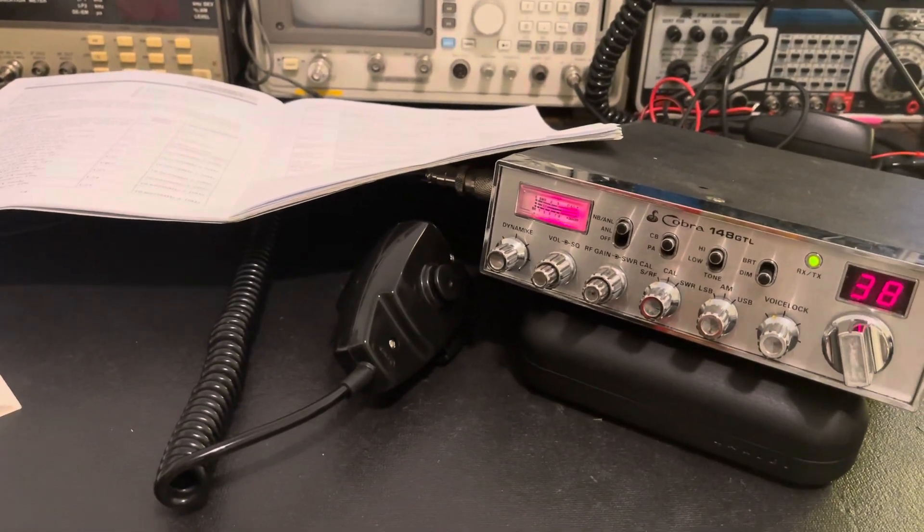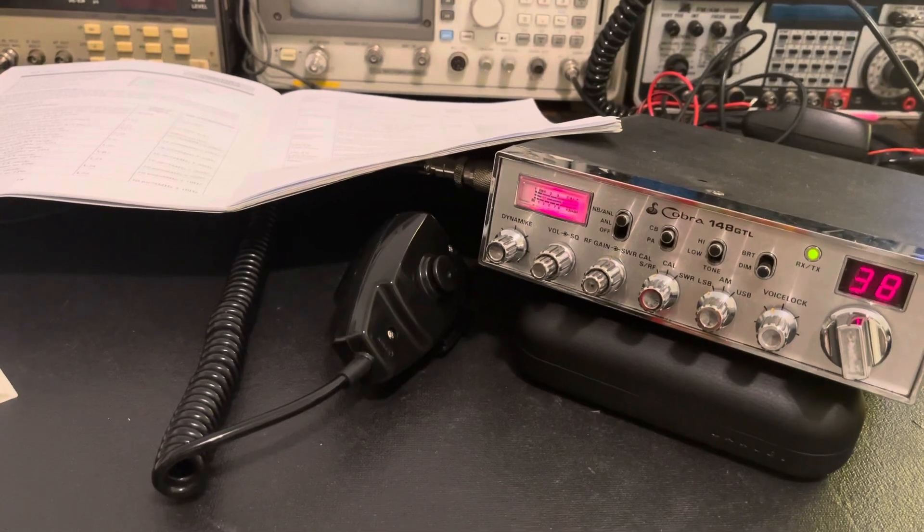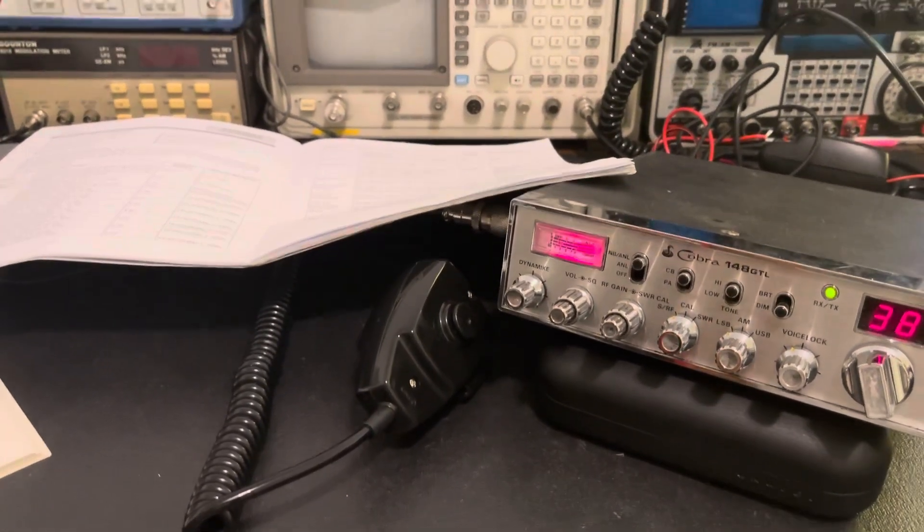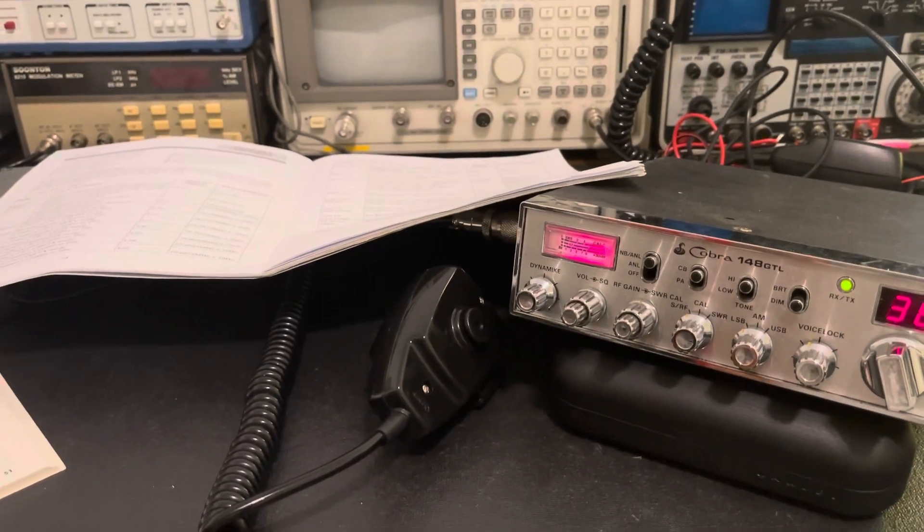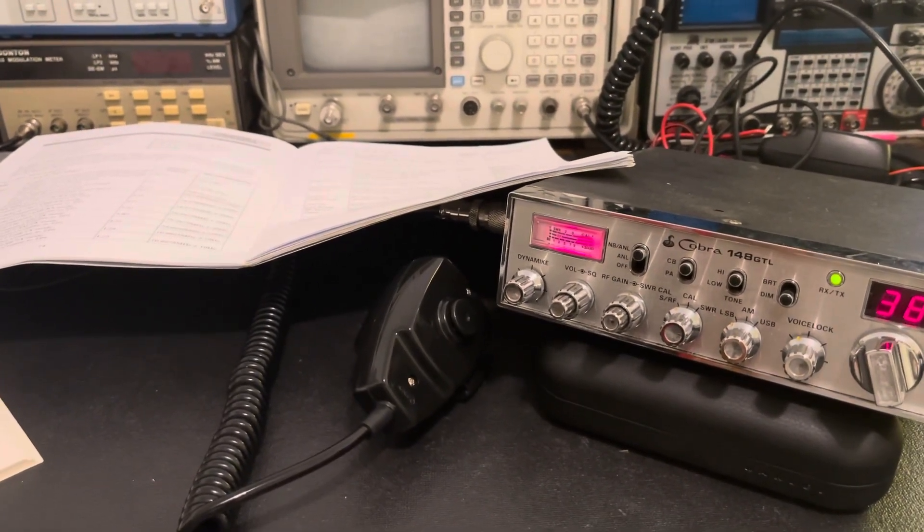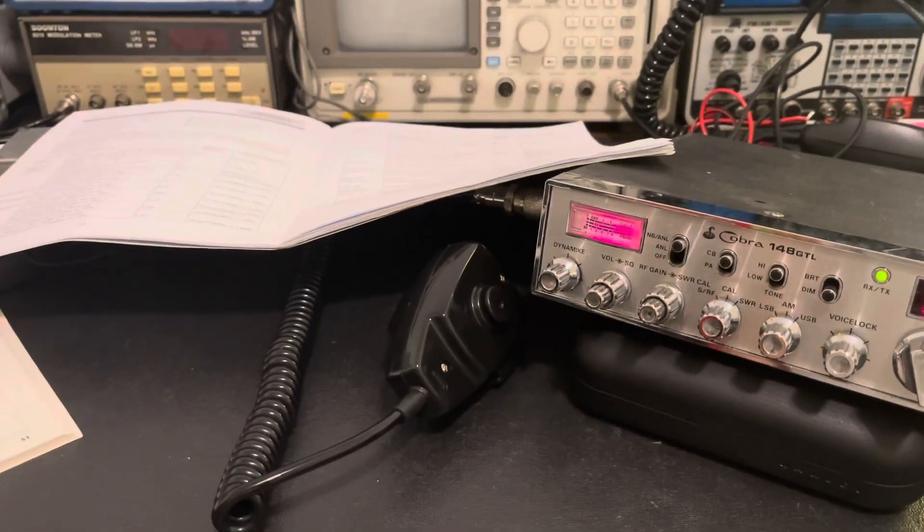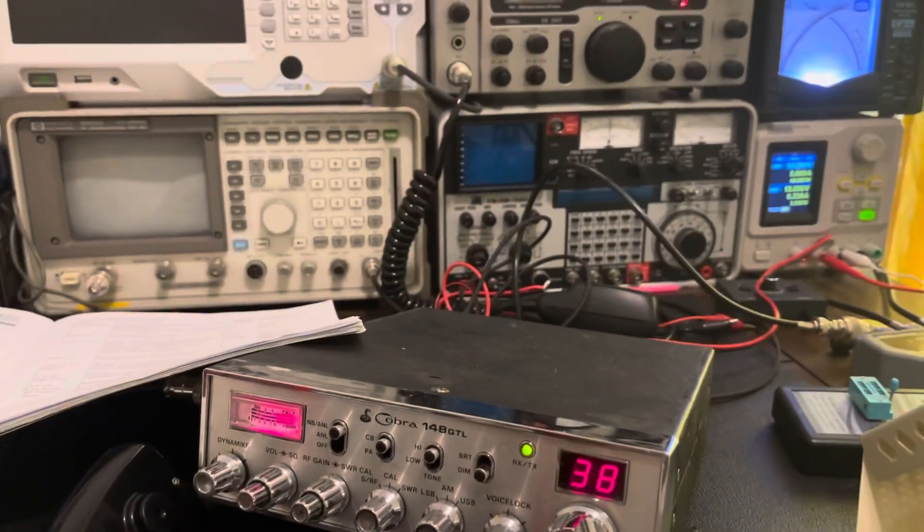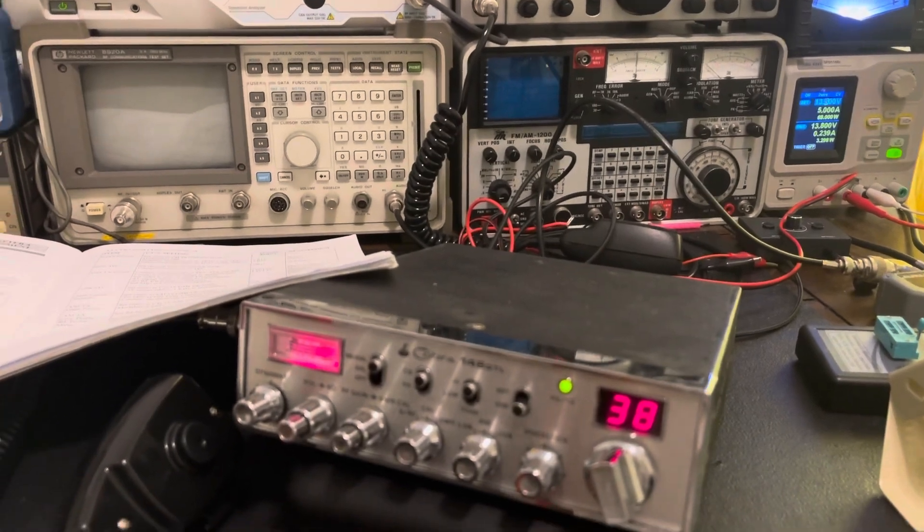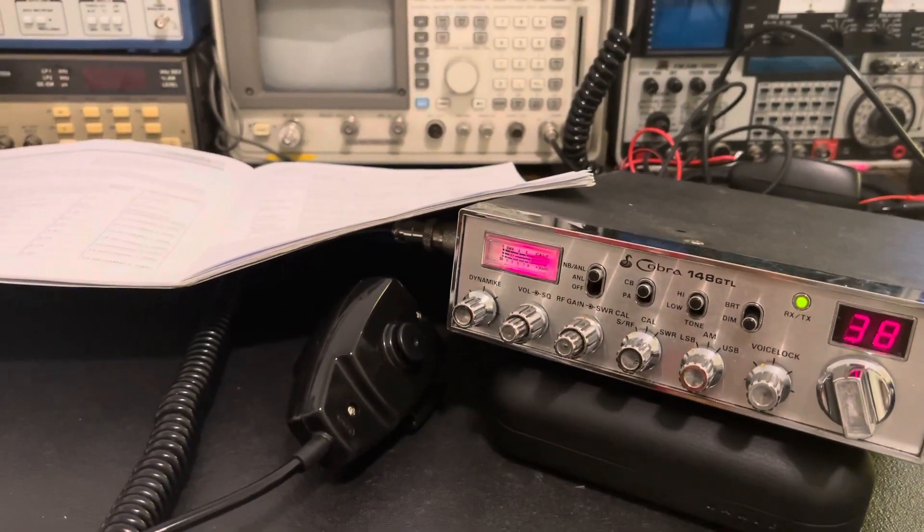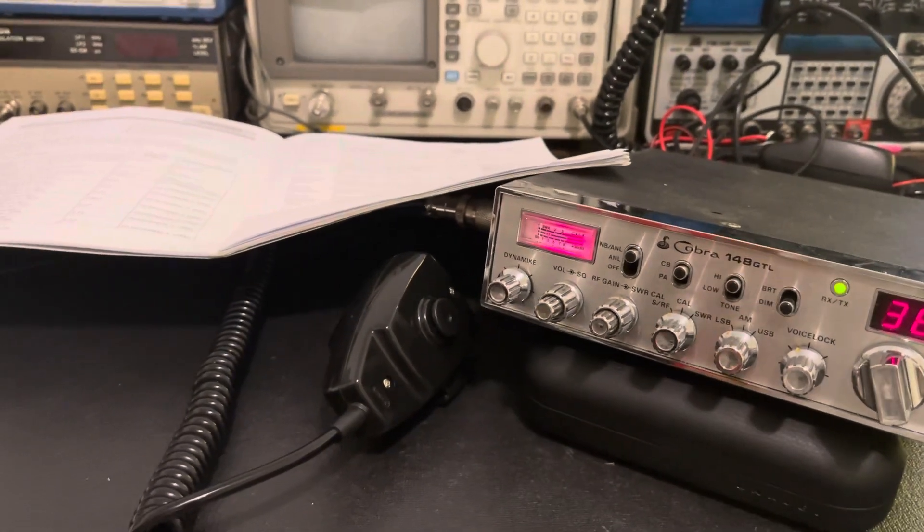When I had powered up that 959D, it was putting out about 22 watts peak on the IFR 1200, which if you basically cut that in half, that puts it at about 11.5 watts RMS.